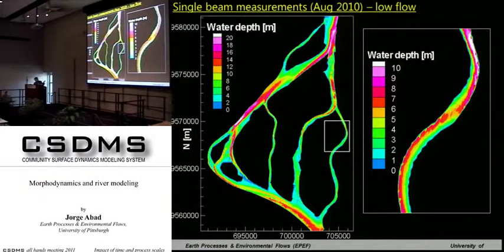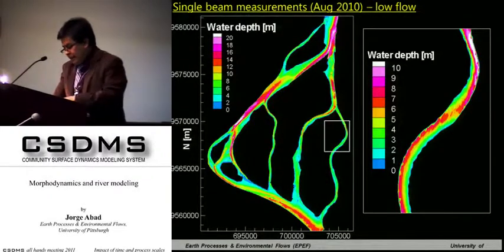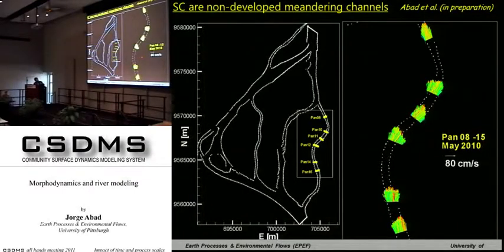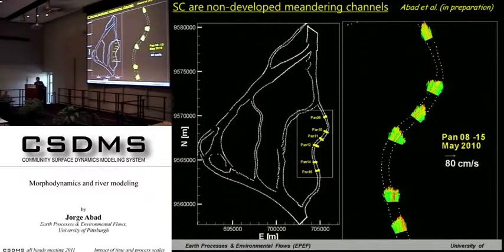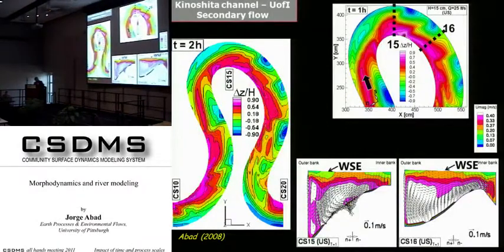We have done many ADCP measurements in different places. The results show a typical meandering configuration — depth-averaged velocities are higher, and the outer bank switches from one side to the other. These are not typical freely meandering channels, and we need to understand these non-developed scenarios.